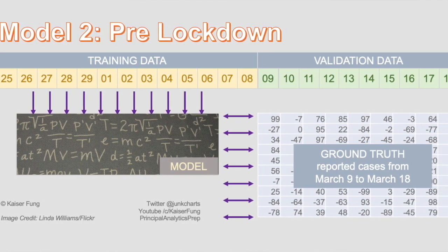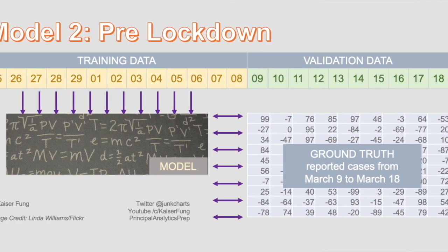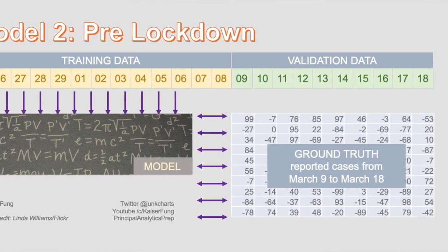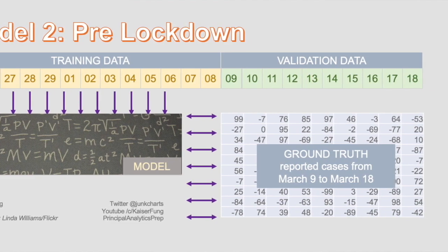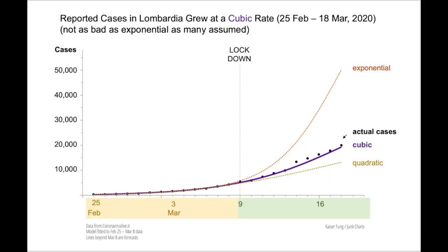This is where backtesting comes in. We can use the pre-lockdown data to forecast case counts for the days between March 9th and March 19th. Because we have official statistics for that period, we can check how good our models are at predicting the future. This next chart shows the startling result. On the left side of the chart, prior to March 9th, the curves are fitted to the historical data. On the right side, the lines represent projections based on models fitted to the earlier data, and the black dots are the actual case counts we can compare against.